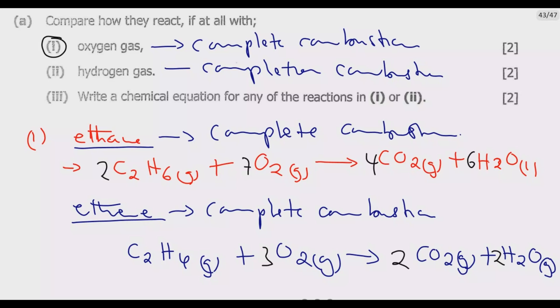For part 3, we need to write a chemical equation for one of the reactions from part 1 or part 2 — all of those equations have already been written above.